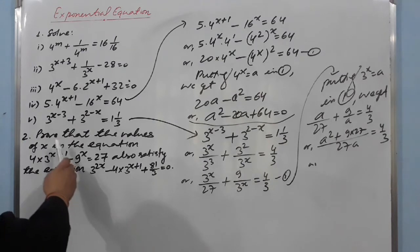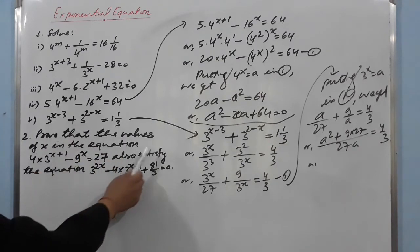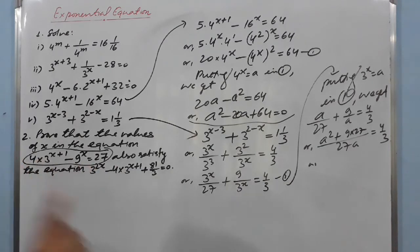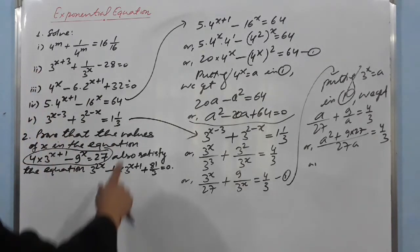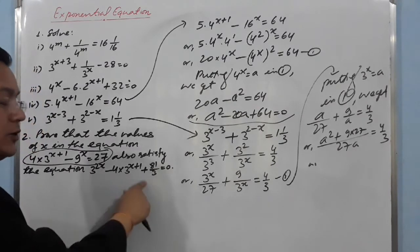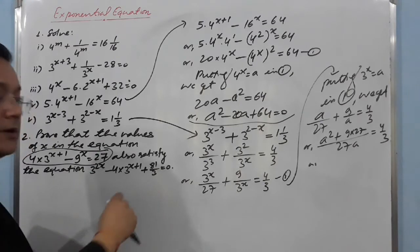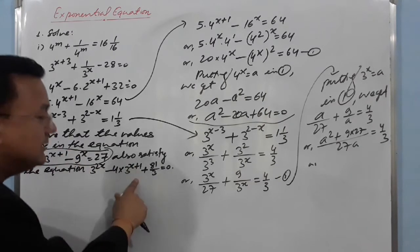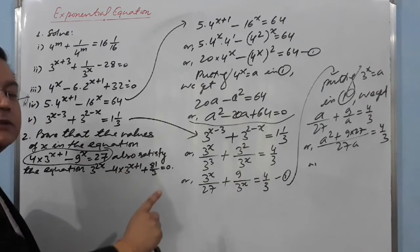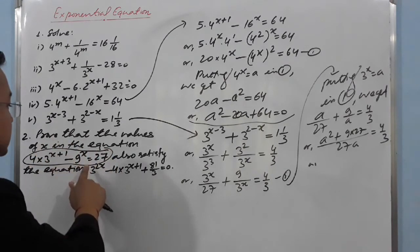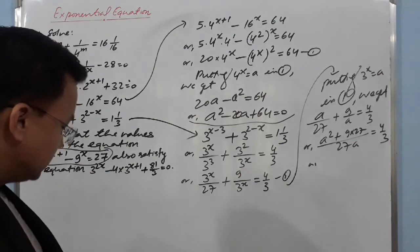Question 2 also asks you to prove that the values of x from one equation also satisfy another equation. First solve the equation to find two values of x, then substitute each value into the other equation's left-hand side. If you get 0 = 0 for each value, write 'which is true.' Hence the values satisfy the equation.